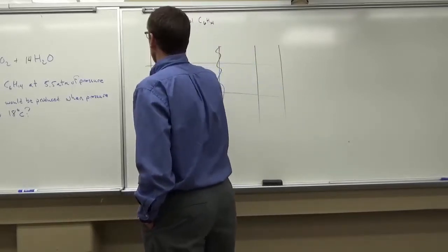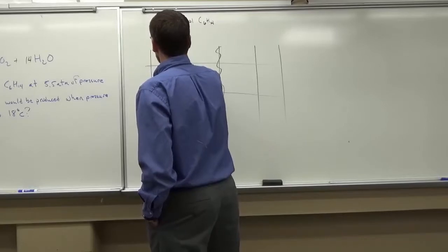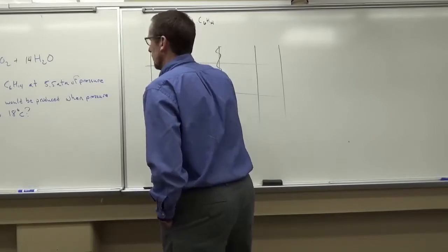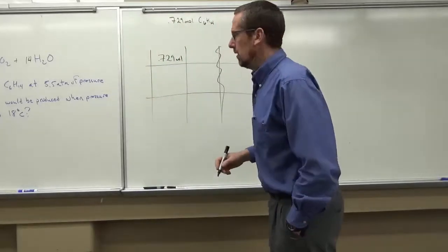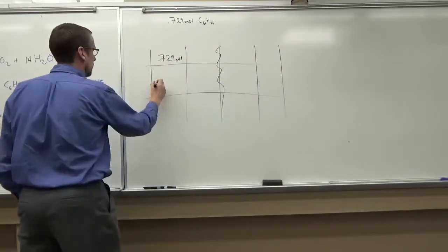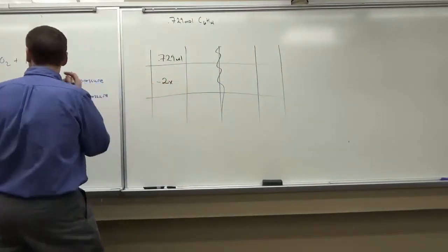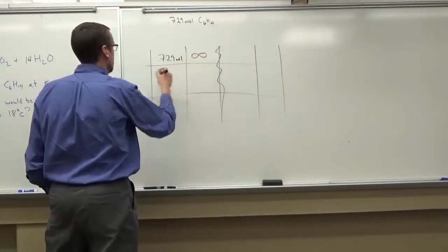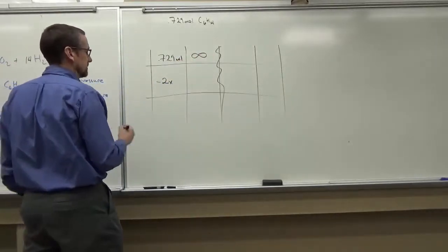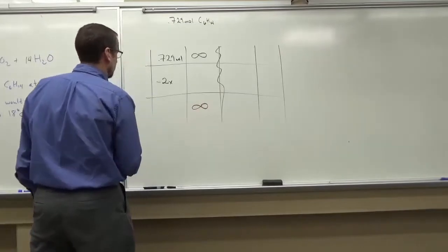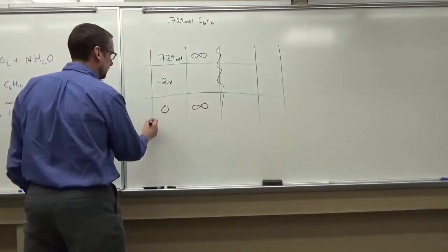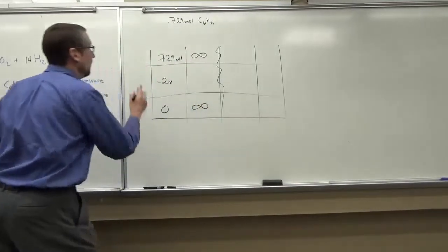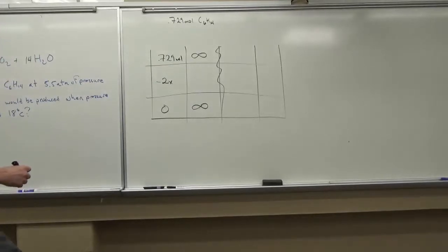So we are starting with 0.729 moles. That's going to go down by minus 2x. I have to make the assumption that we have unlimited oxygen. So we don't need to think about that as a potential limiting reactant. So the C6H14 is going to go to zero.